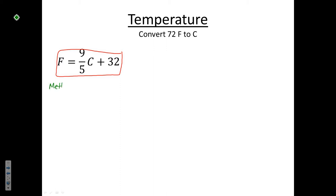I'm going to show you two different ways to do this. The first method, we'll call this method 1, is to use the formula that we have in front of us and simply substitute in the 72 in place of the F. So I have 72 is equal to 9/5 C plus 32. Again, my goal is to solve for Celsius. So if you remember what we did just a moment ago, we're going to do exactly the same thing.